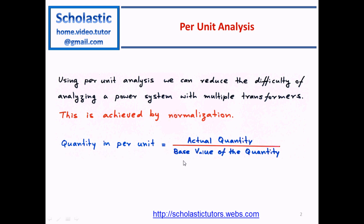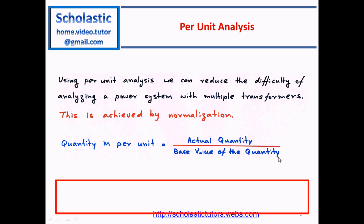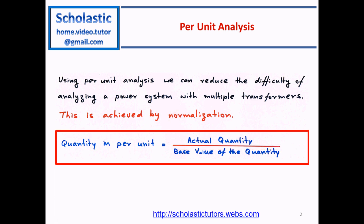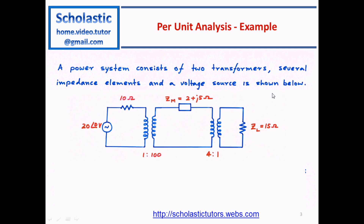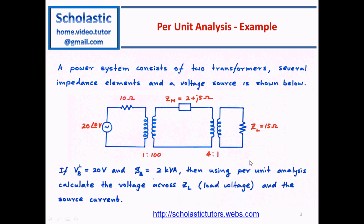Let's see how we are going to use this equation. An example of per unit analysis: a power system consists of two transformers, several impedance elements, and a voltage source, as shown below. There are two transformers — one here, one here — with turns ratio 1:100 volts to 1, a power source, and several impedance elements.